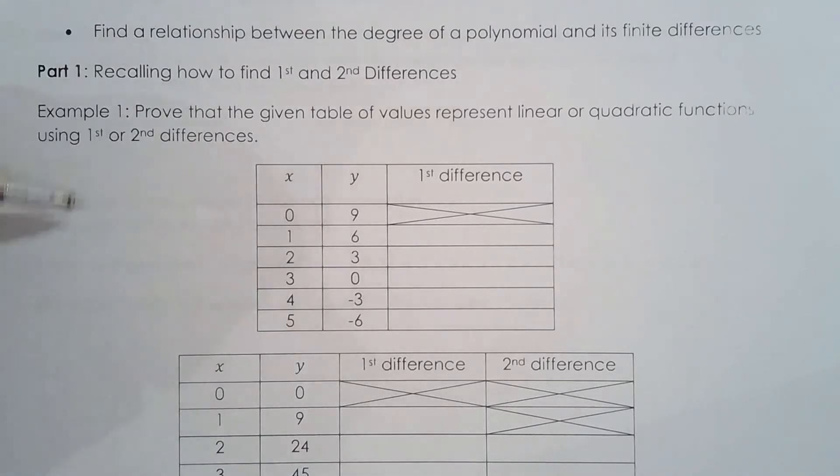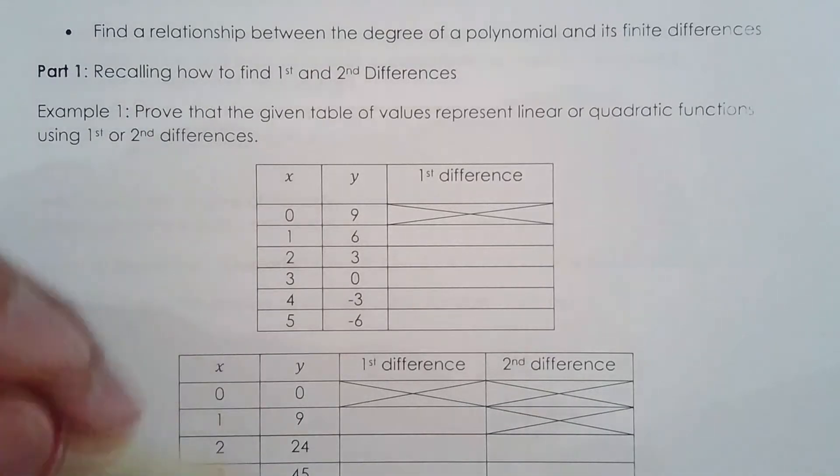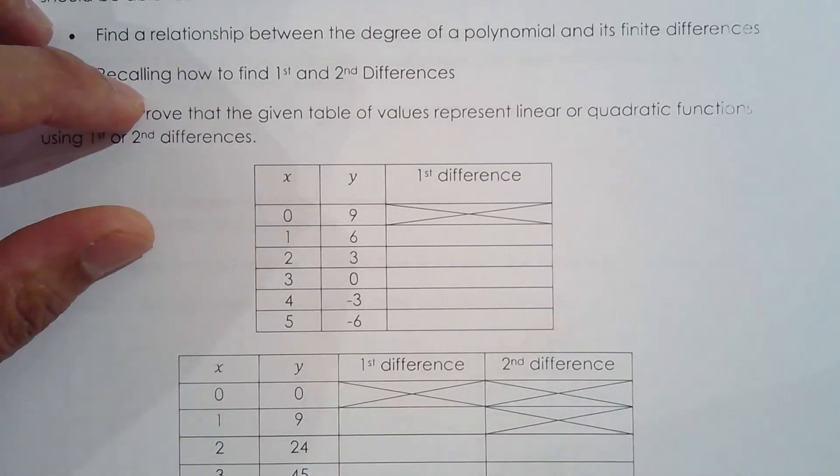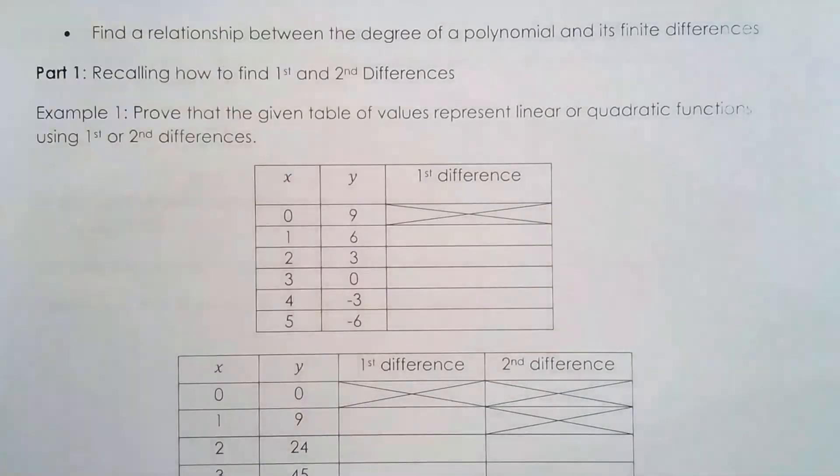When you found the first differences and saw that they were constant, you would say that there's a linear relationship demonstrated by the table. And if the second differences were constant, you would say that there's a quadratic relationship demonstrated by the table. So let's just go over that very quickly.